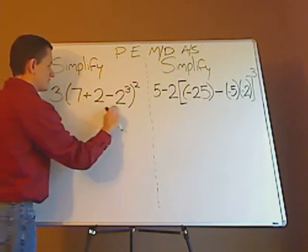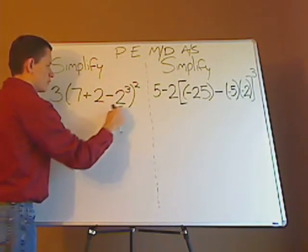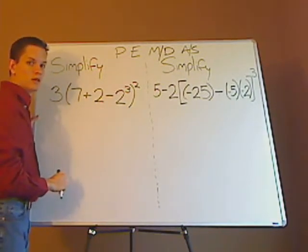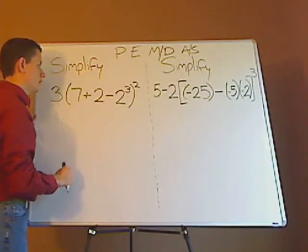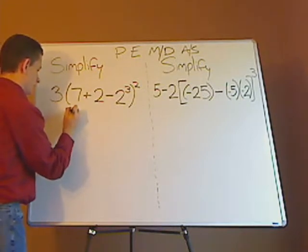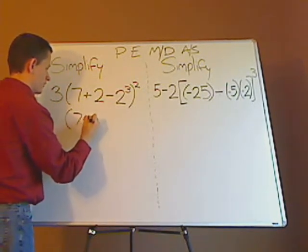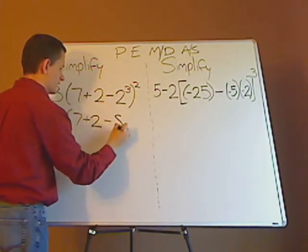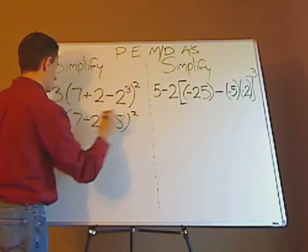So inside the parentheses what would you do first? You would do the exponents. So that would be 7 plus 2 minus 8 squared.